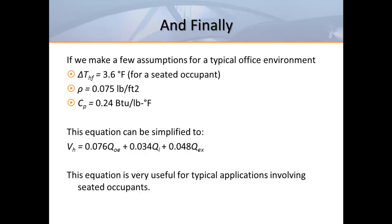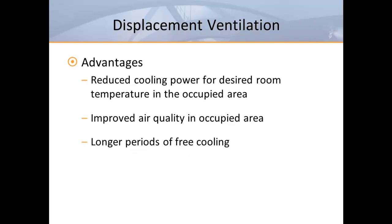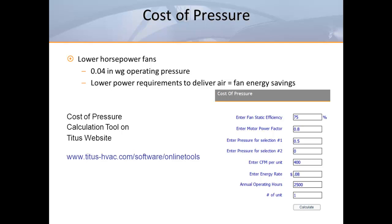Now we'll step away from the math and look at both the advantages and limitations of displacement ventilation systems. Building owners pay higher electric bills for excess system pressure, so anything we can do to lower pressure requirements will save energy while reducing operating costs. There's a calculating tool called the cost of pressure that can be found on the front page of our website. It provides a simple way to compare the operating costs of air devices operating at different pressures on an annual basis.